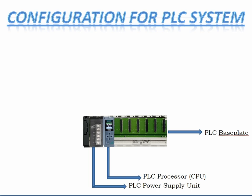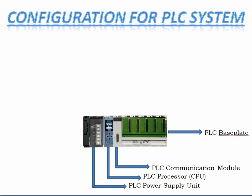Now the PLC processor has been added. After the power supply unit, we have added the PLC processor unit — this is called the CPU, the heart of the PLC. All the programming and everything is stored in this CPU. Next, we will add the PLC communication module. What does this communication module mean? If you want to add many input and output devices, using this communication module you can add many other racks, so that input-output devices can be increased.